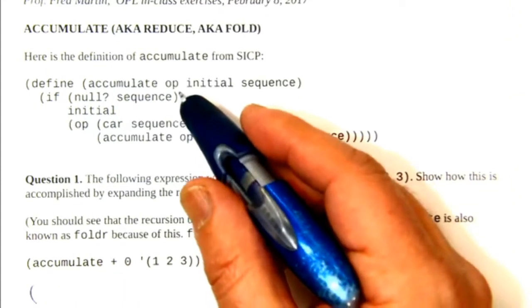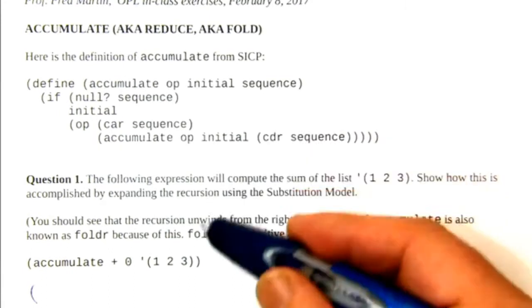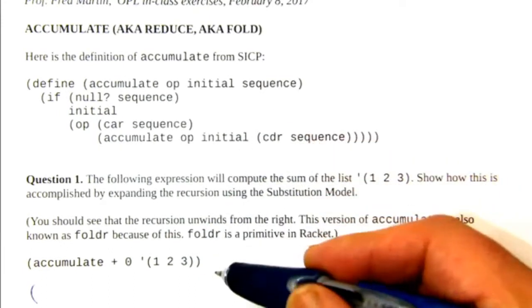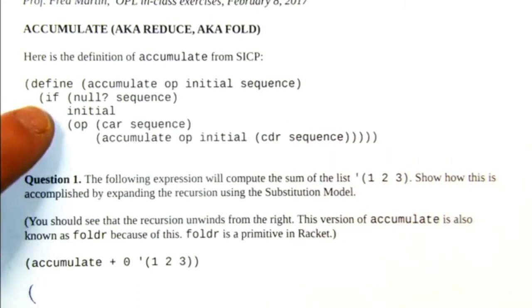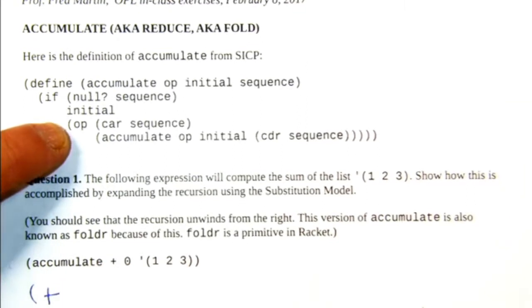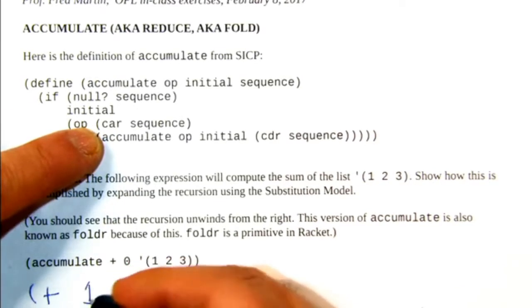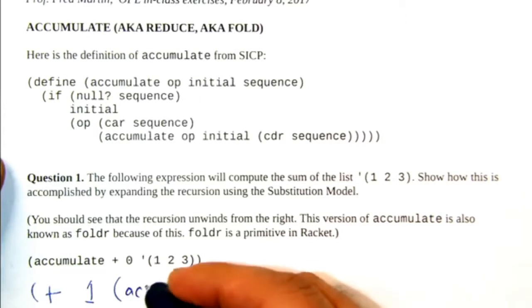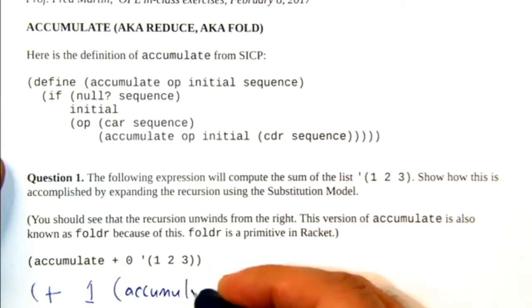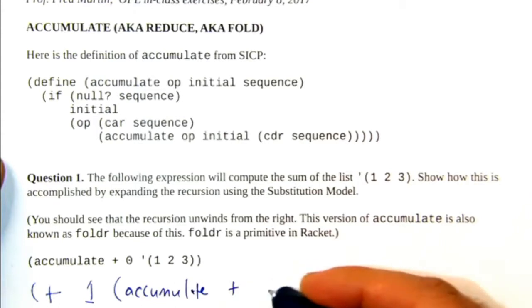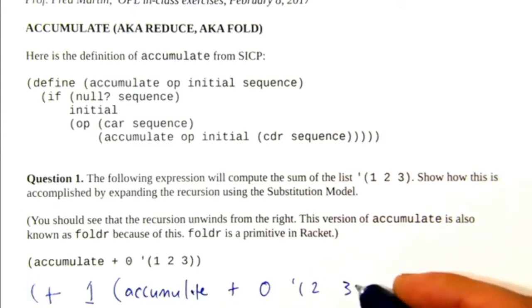So op gets bound to plus. Initial gets bound to zero. Sequence is the list one, two, three. So now here we are in accumulate. Sequence is not null. So we do this. We rewrite to this expression. Op is plus. Car of sequence. Sequence is one, two, three. Car of it is one. And then a recursive call. Cdr of sequence is two, three. Hey, guys, notice I made the list shorter.